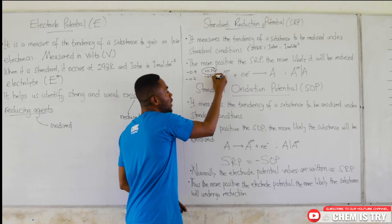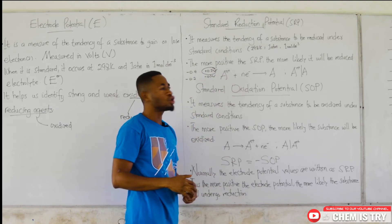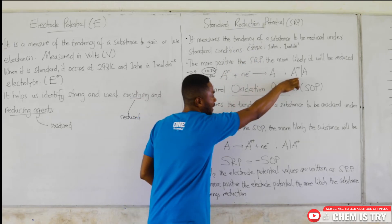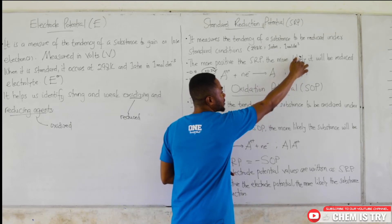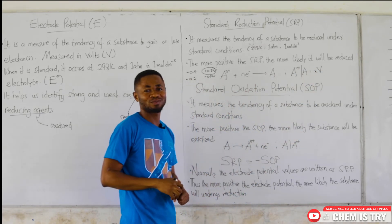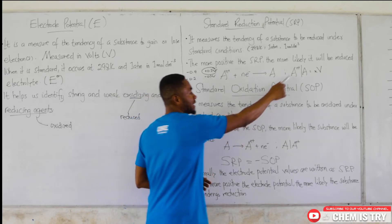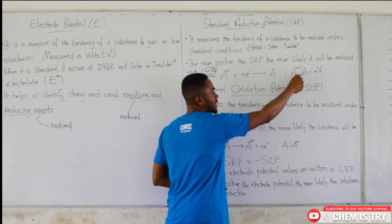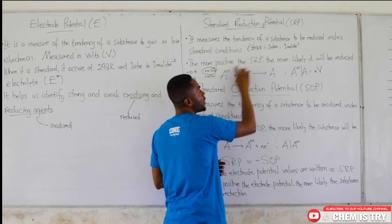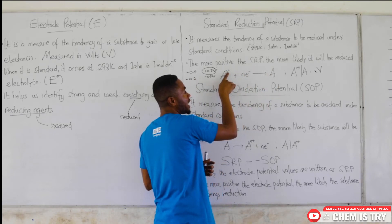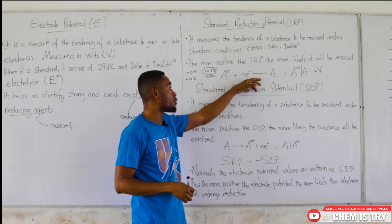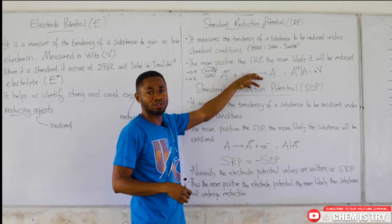And if this one is reduced, this one will be oxidized. Normally, you will see the standard reduction potential written as a shorthand in this form: A⁺ / A equals x volts. Looking at this, this is at the reactant side and this is at the product side. It is represented by a reduction equation, because the charge over here is positive and over here is zero, so the oxidation number is reducing. This is how we represent a standard reduction potential equation, either this way or in the abbreviated form.